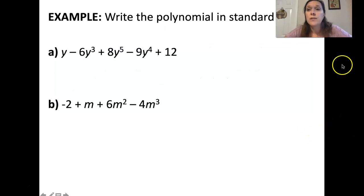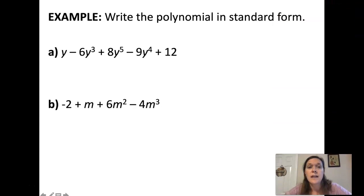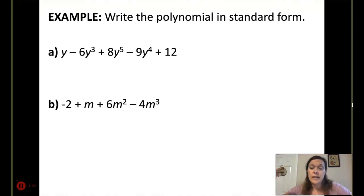Here we're going to write the polynomial in standard form. Standard form tells us that we need to have your highest exponent written first, and then fizzle down to the smallest, which would be 0. In this case, we have 1, 2, 3, 4, 5 different terms. The highest exponent is 5, so I'll write that term first. 8y to the 5th, minus 9y to the 4th, minus 6y to the 3rd, plus y plus 12. That's the polynomial written in standard form.